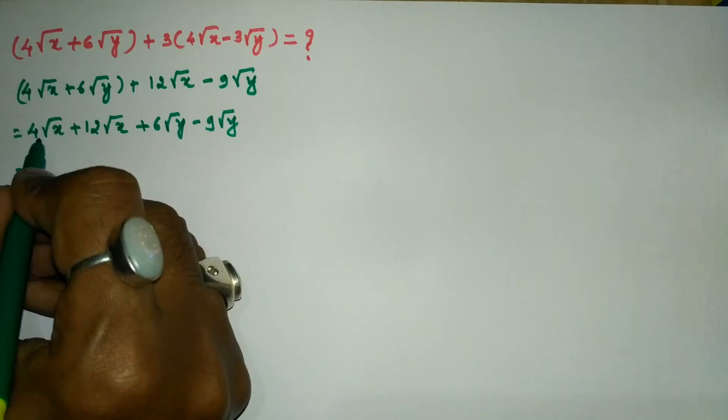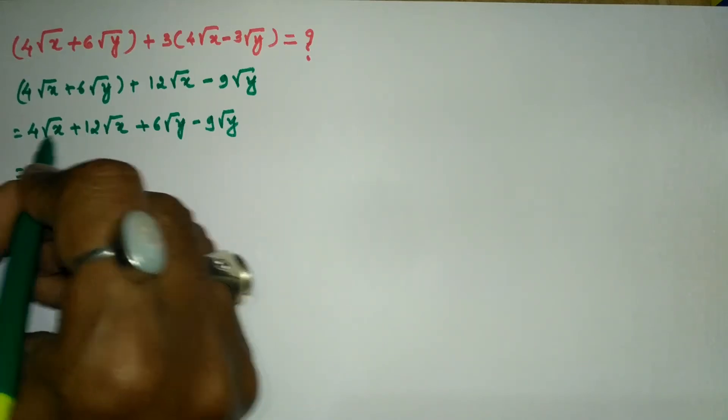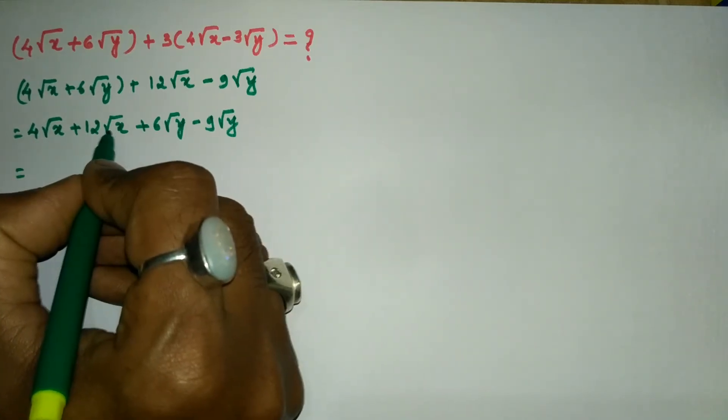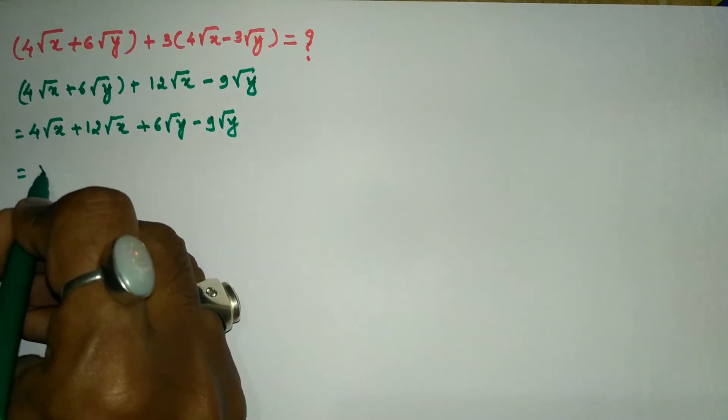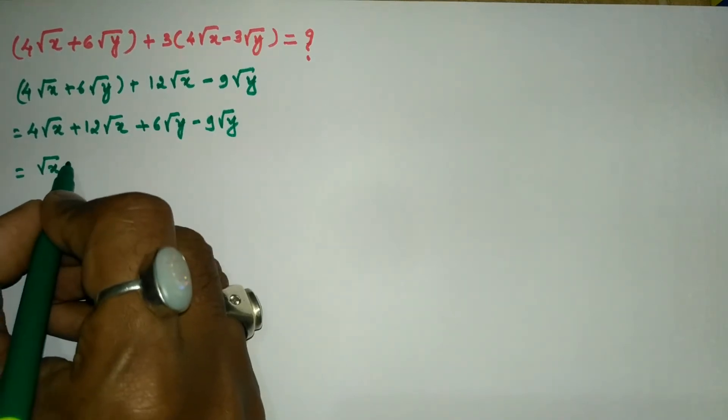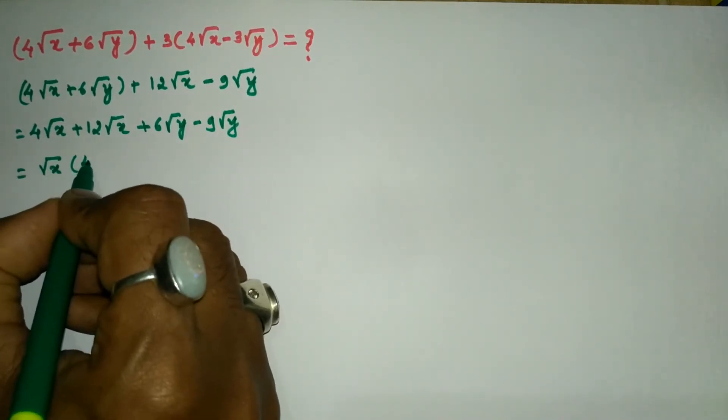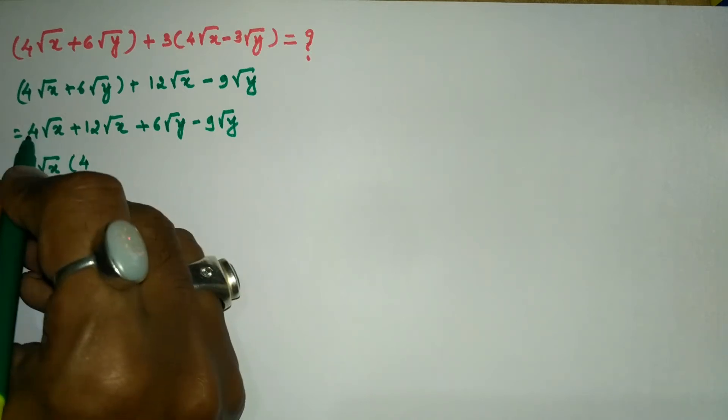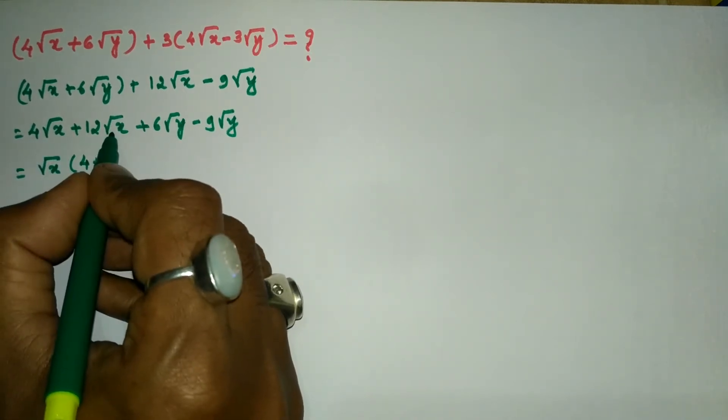Now, let us further simplify. Here √x is common. So we are going to write the common term √x, and inside the bracket we remain with coefficients 4 and 12.